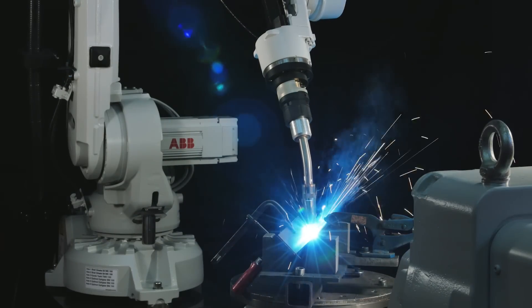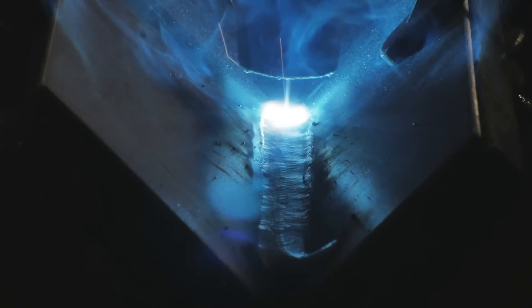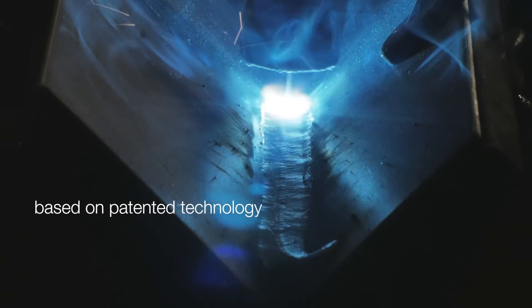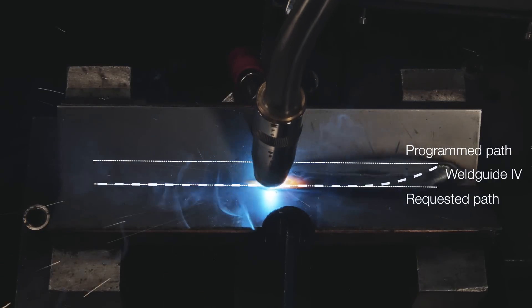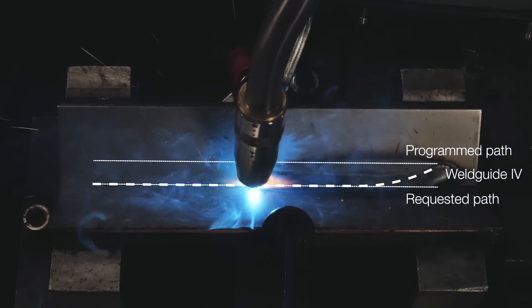WeldGuide 4 is the most cost-effective and most powerful arc welding tracking sensor on the market. Based on patented technology, it measures the correct impedance close to the arc and guides the robot to the correct path.